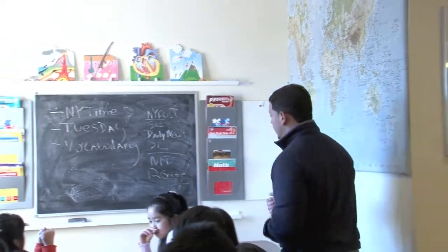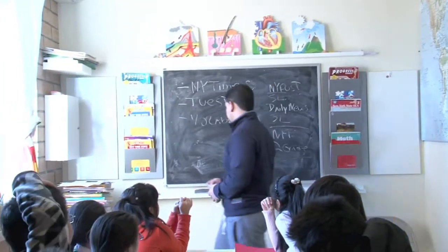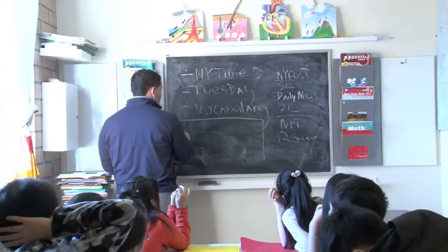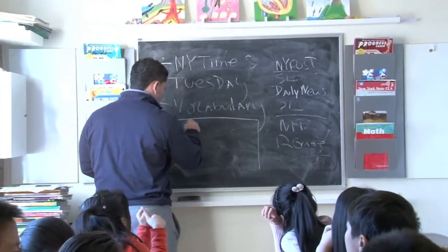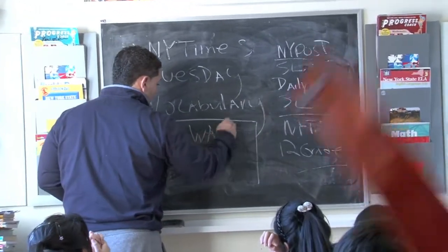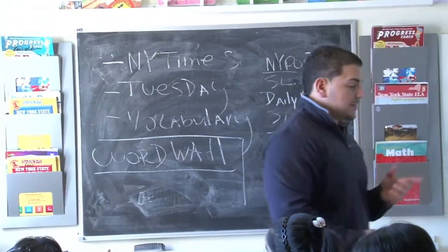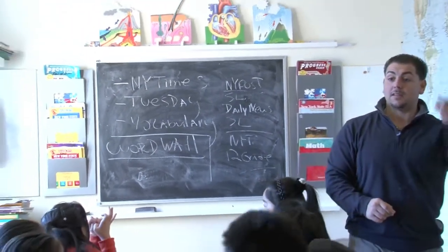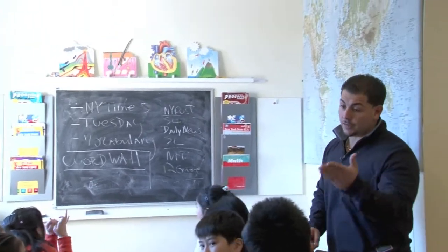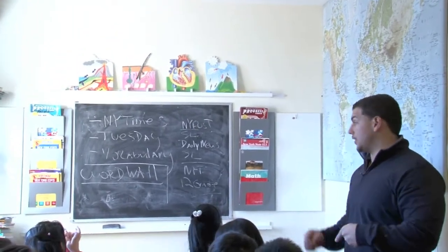You want to have a dictionary. You get a little pocket one in case you come across a word that you don't know. Now, if you come across a word that you don't know, what do you want to do with it? You want to develop something called a word wall. A word wall. Now we're going to take it up to another level.